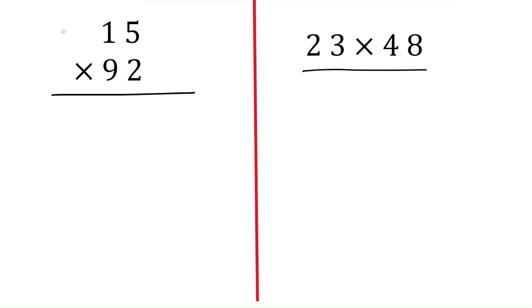In the ones place you have two, so multiply two with five and multiply two with one. Two times five is ten, and one is the carryover. Two times two is two; add the carryover — two plus one — that is three.